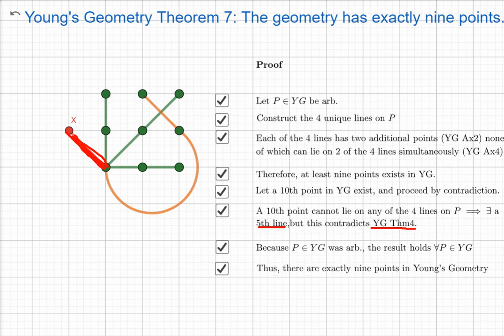Therefore, there must be exactly nine points in Young's Geometry. I apologize — in the online proof I'll add the missing justifications: Theorem 1 and Theorem 4.